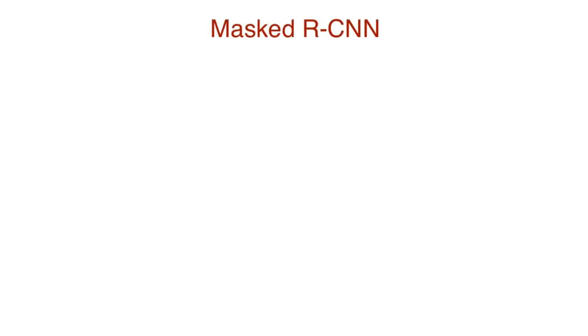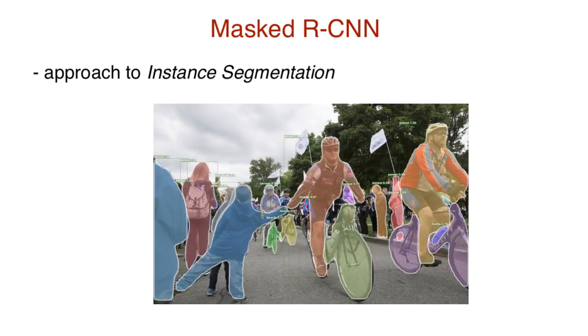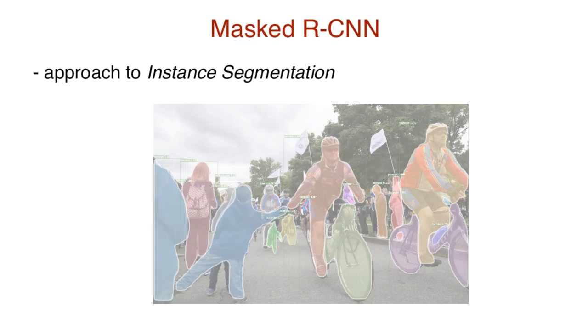Masked R-CNN works towards the problem of instance segmentation, the process of detecting and delineating each distinct object of interest in an image. Instance segmentation is a combination of two sub-problems.